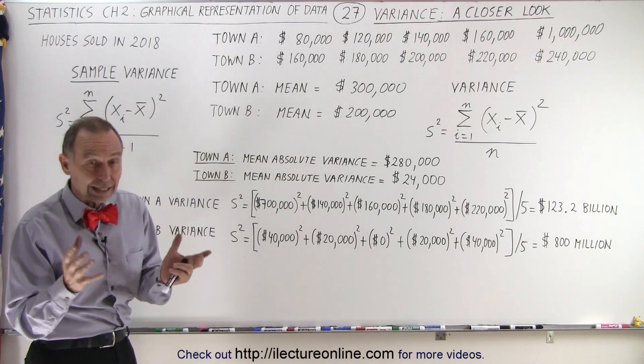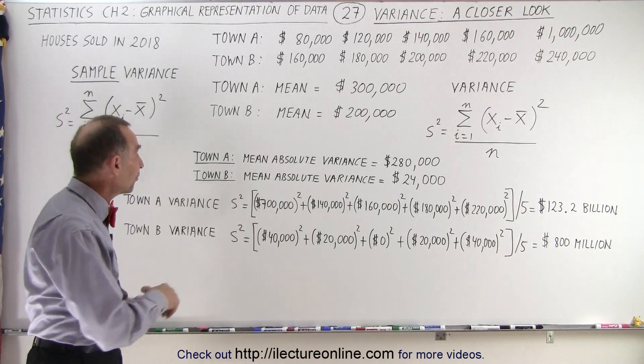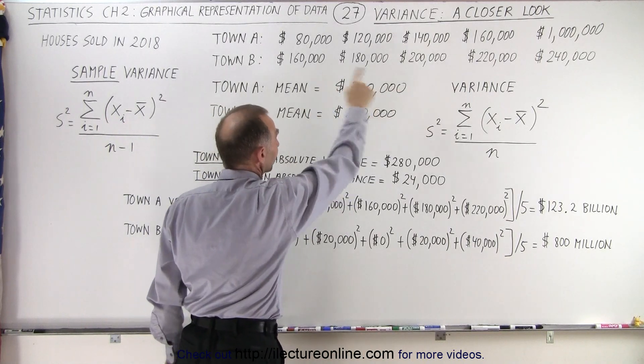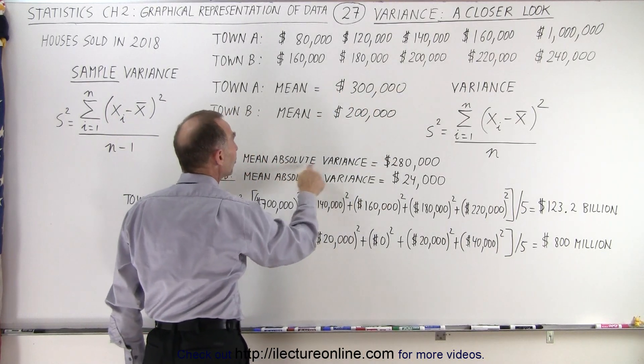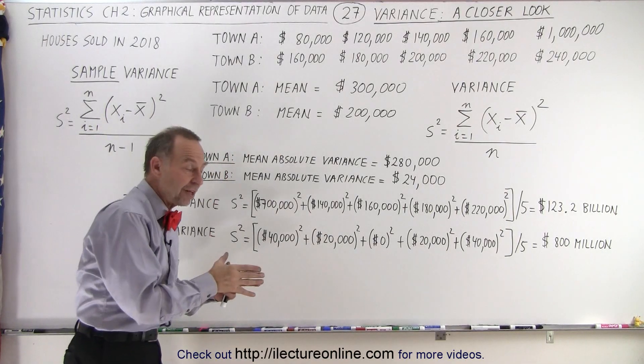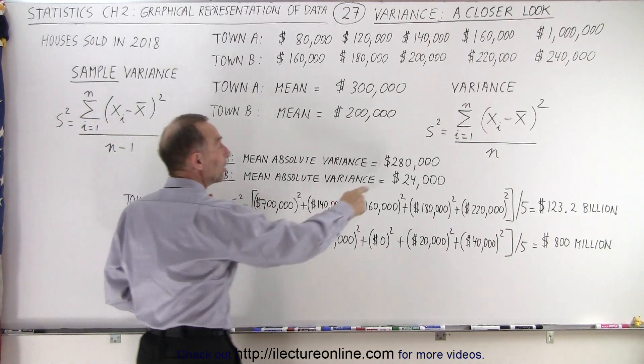In town B, again, that gives you an indication that the house prices were all fairly close together. But for town A, because one of the houses was sold for a much bigger price than the other four, the mean absolute variance, the average difference between the average value of the house and the house prices is a much greater number, $280,000.